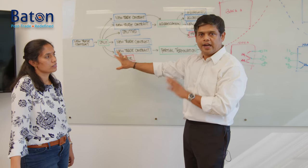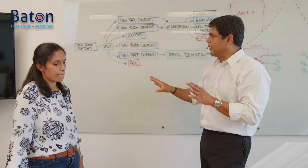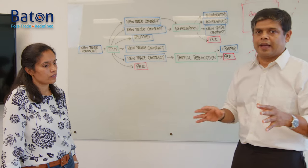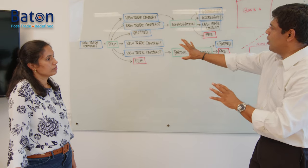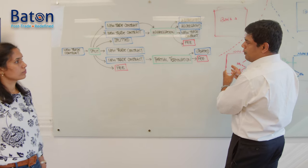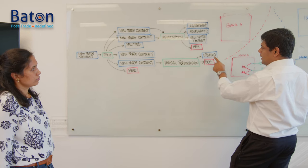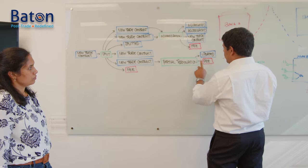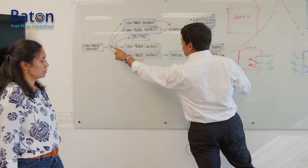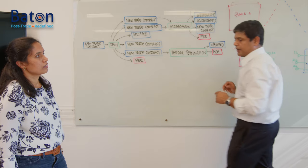You should be able to do that. That is where extensibility is important, because there is no one-size-fits-all — every bank is different. With the domain model, we show the complete life cycle and preserve lineage. A fee that originated from a partial termination, which was the result of a contract that came from a split — you can draw the complete lineage of that.